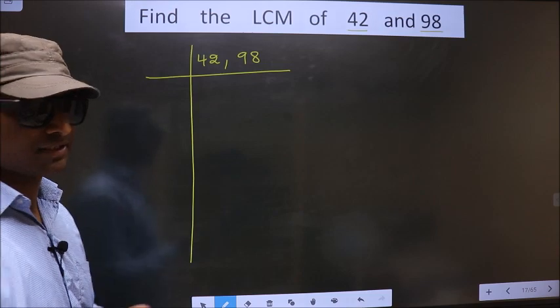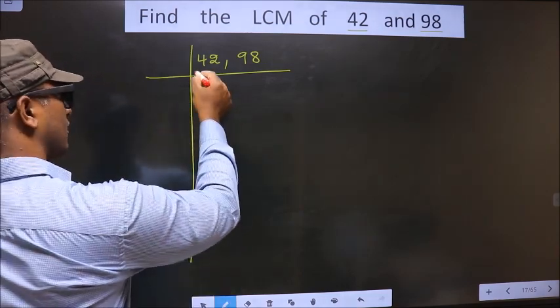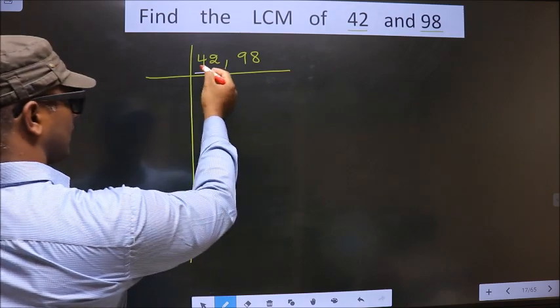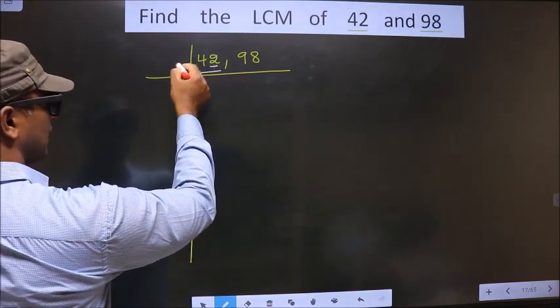Next, we focus on the first number, that is 42 here. Now for this number, last digit is 2 which is even, so we take 2 here.